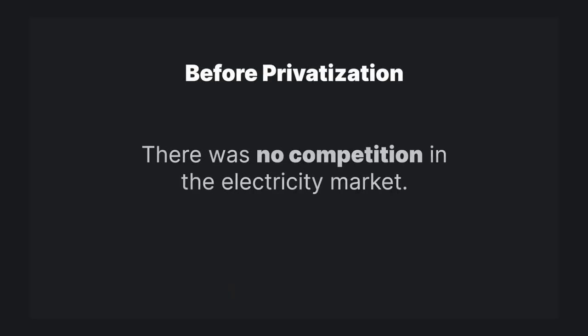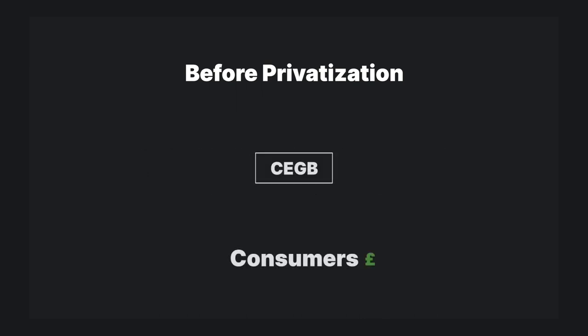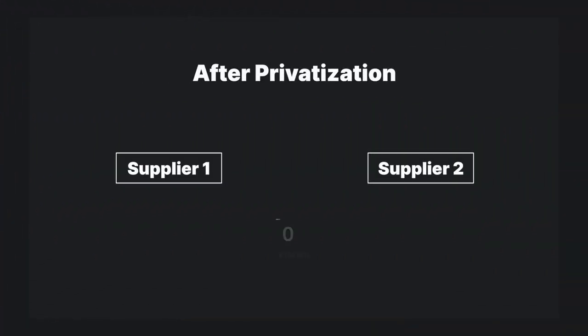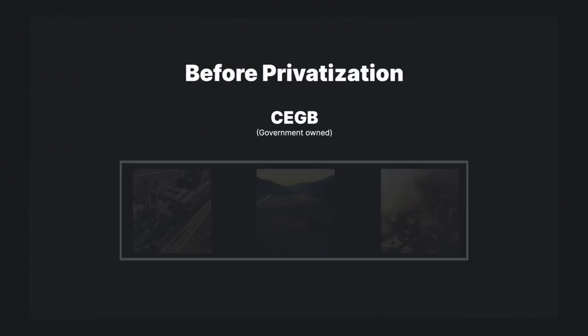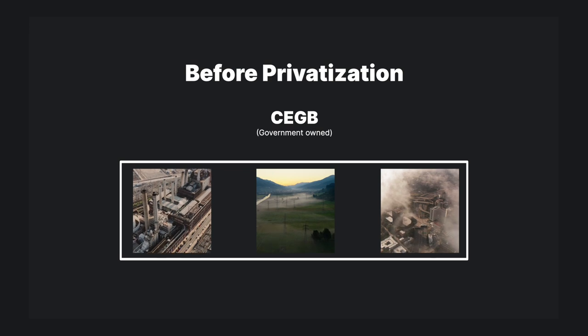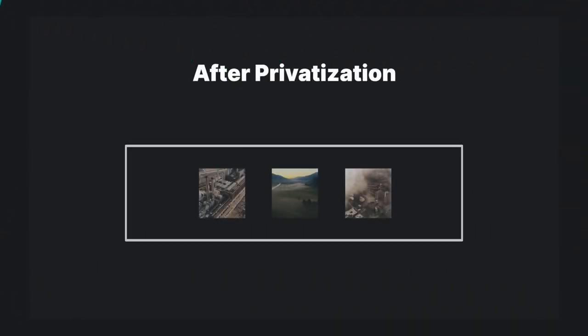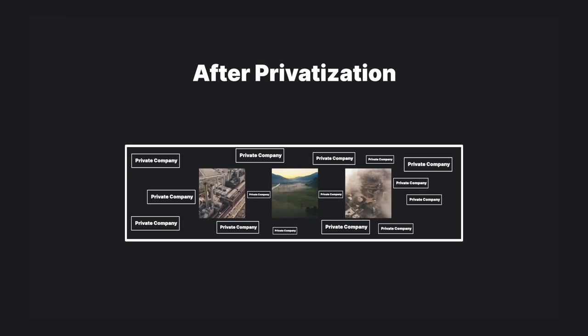What are the main differences between pre-privatisation and post-privatisation electricity markets in Great Britain? Before privatisation, there was no competition — consumers had no choice of supplier and had to purchase their electricity from the CEGB at the price set by the government. But after privatisation, the market was opened up to competition and suddenly consumers had a choice of who to buy their electricity from. This led to a more market-driven approach with prices fluctuating based on supply and demand. Before privatisation the CEGB managed all aspects of the system from generation through to supply, making it much easier to coordinate. After privatisation, the market became much more complicated with dozens, hundreds and thousands of companies involved at different stages of the supply chain.